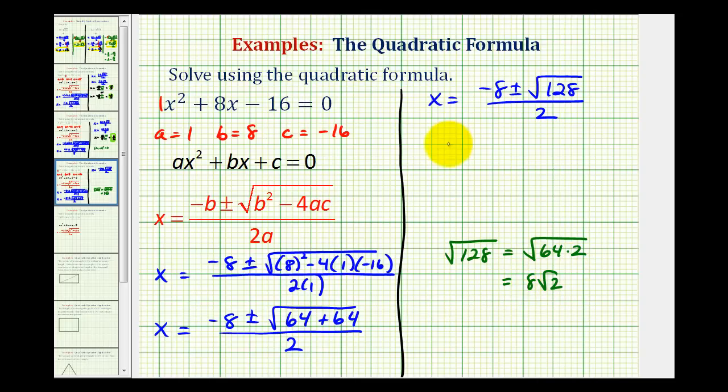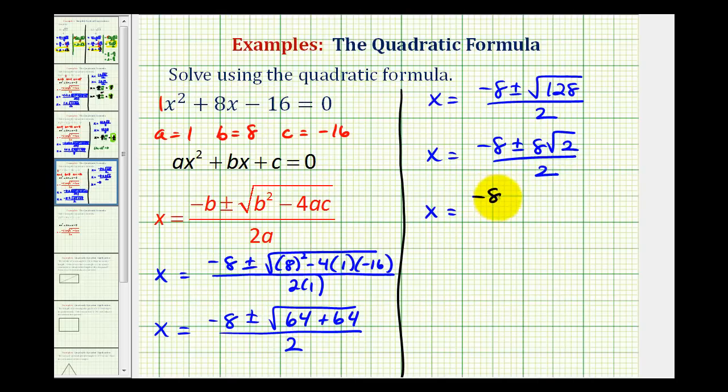So we can write this as x equals negative 8 plus or minus 8 square root 2 divided by 2. And now we need to be careful simplifying this. We cannot just simplify the 8 and the 2 here. Because we're dividing by a binomial. We can write this as two separate fractions. Negative 8 divided by 2 plus or minus 8 square root 2 divided by 2.